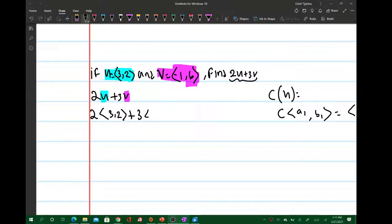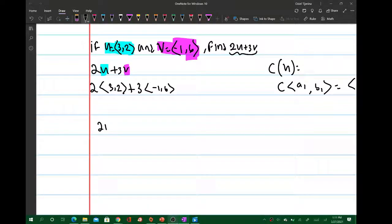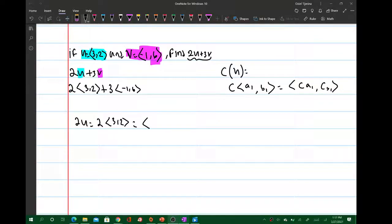Now let's first look at 2u by itself. 2u is 2 times the vector <3, 2>. Now looking at this property, we can say that this is equal to the following: <2·3, 2·2>. So this is equal to <6, 4>. So doing this, you get that this is vector <6, 4>.